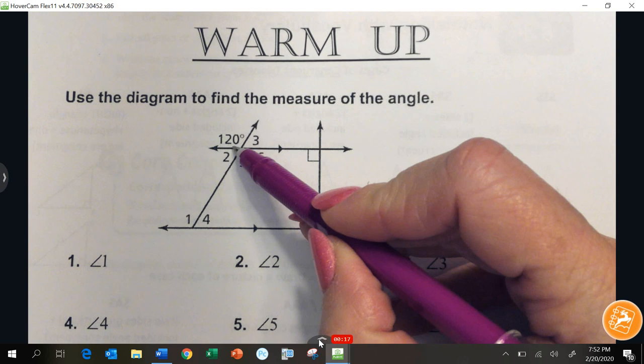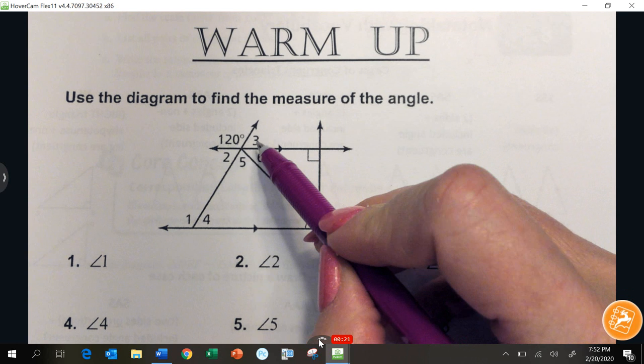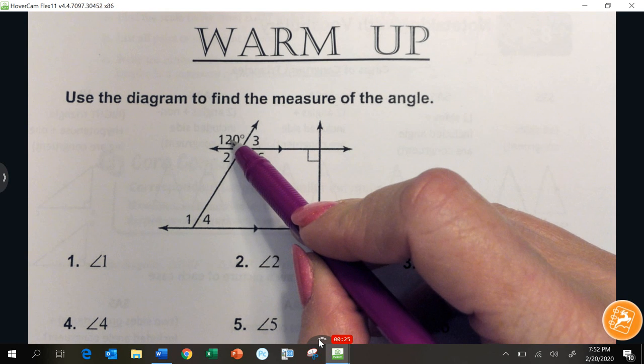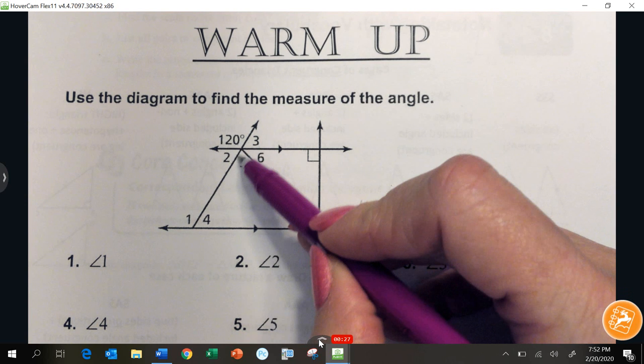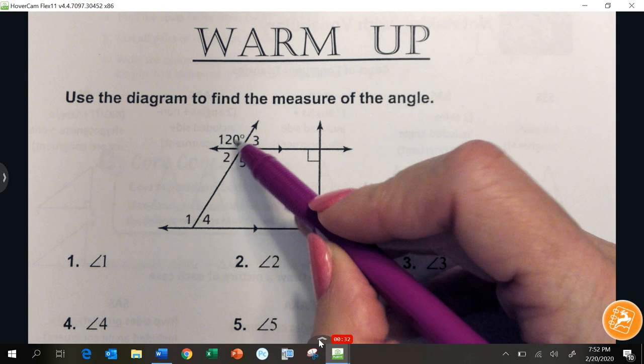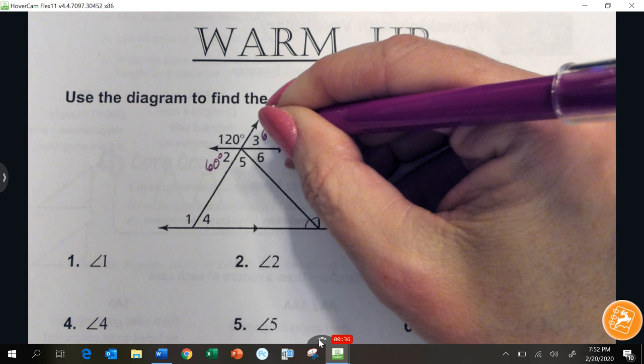We know that this angle right here is 120 degrees. Angle 3, right here, that's a linear pair. Also angle 2, that's also a linear pair to be 180 degrees, so angle 2 has to be 60. Angle 3 also has to be 60.